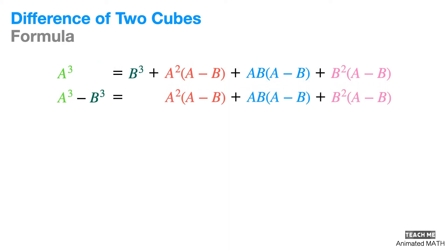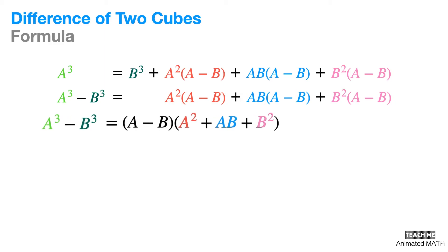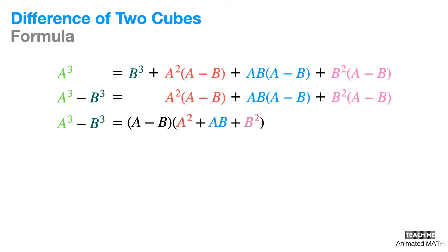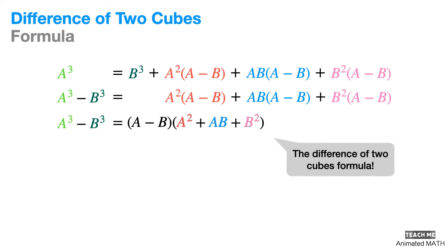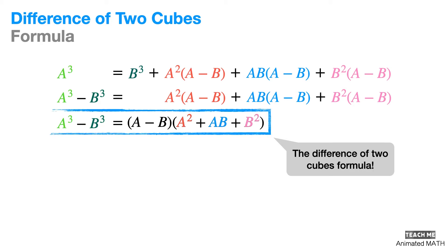Since A minus B is a common factor for all three terms, we can factor it out. And voila, we end up with the same formula, which is (A minus B) times (A squared plus AB plus B squared).